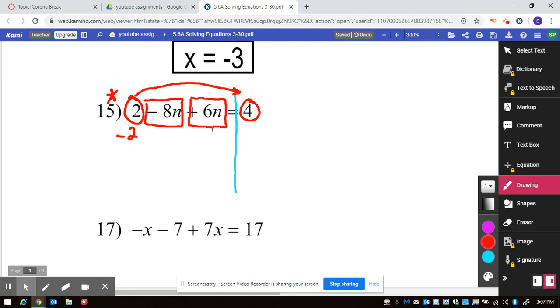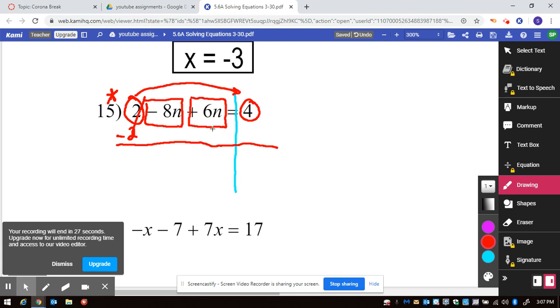So minus two, because two minus two happens to be equal to zero. And then I didn't do anything with the eight and the six, or I can combine those. Negative eight plus six is going to be negative two n when you combine these. And four minus two is equal to two. Then from there, divide by negative two, so n is equal to negative one.